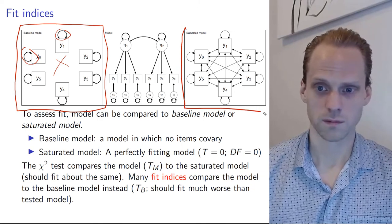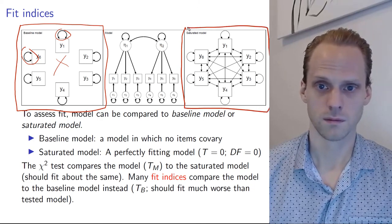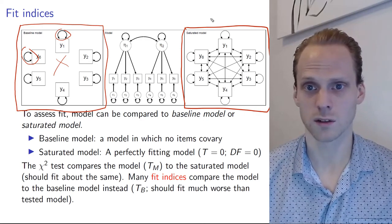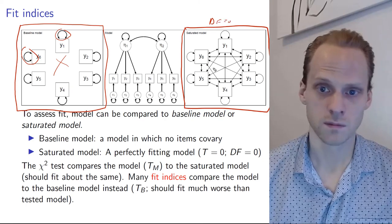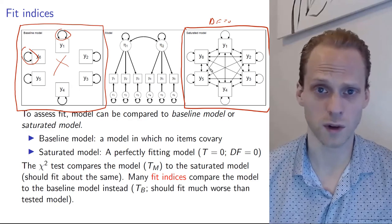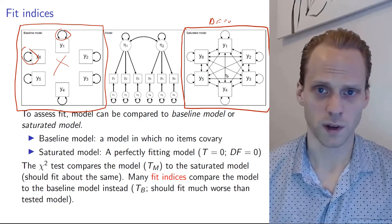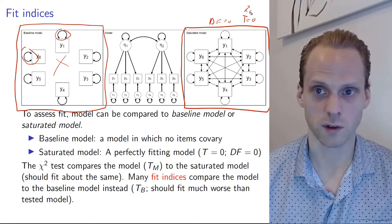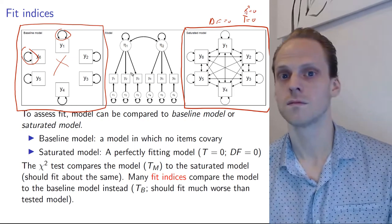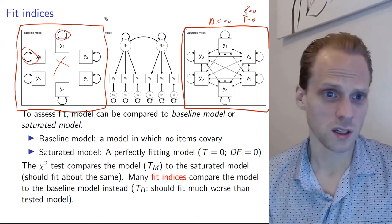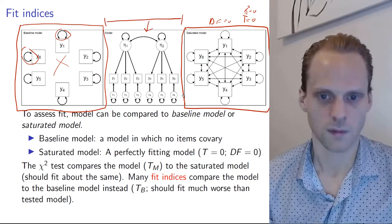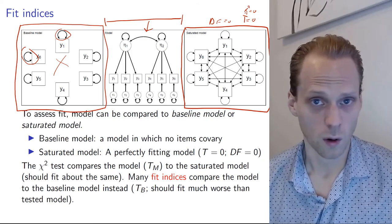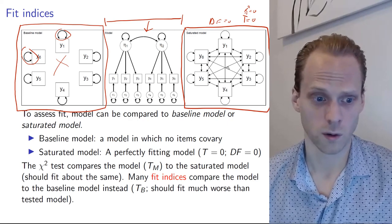And then we have a saturated model, where we assume everything is correlated. This always has degrees of freedom equal to zero, because we have one parameter for each potential correlation. That means we always get perfect fit, so chi-square equals zero. Somewhere in between this baseline world and this saturated world is our model, and all these fit indices try to place us somewhere on this scale.